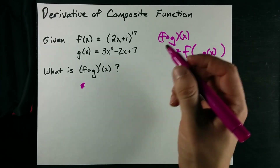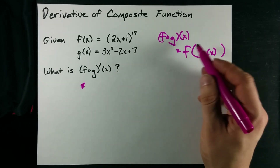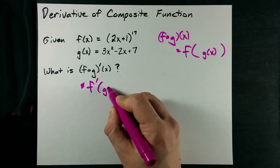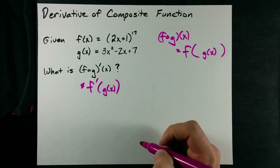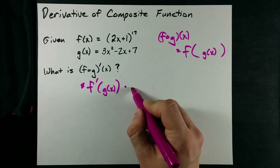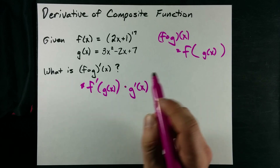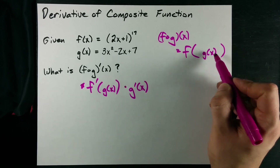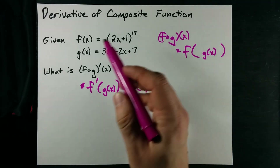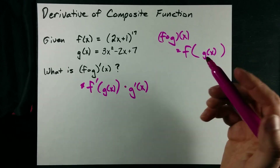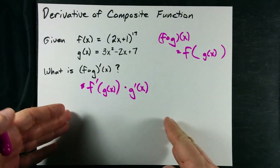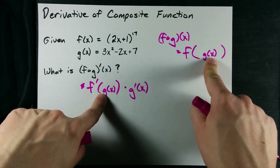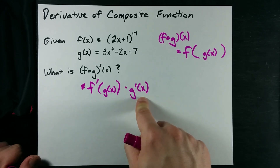Now that looks complicated, but my point is that when you take the derivative of that, you simply end up with the derivative of f and g of x is still on the inside, times the derivative of what's on the inside. This is chain rule. You have a function on the outside and a function on the inside. When you take the derivative of the whole thing, you take the derivative of the outermost function — that was f — keep the inside function the exact same, and then multiply it by the derivative of the inside.